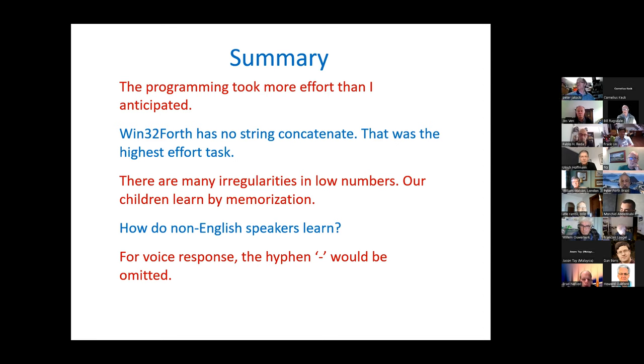We see that there are many irregularities in the low numbers. And I guess our children and we learn by memorization. We certainly don't have the algorithm in our head on how we do there between 11 and 17. And I guess non-English speakers, I don't know how they learn. And finally, in voice response, the voice response system that I used online handled the hyphen properly. Because proper English would be to write numbers like 21 as twenty hyphen one. But if you're doing a real speech input translation, the hyphen would not be present.